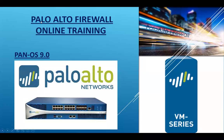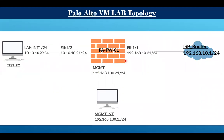Welcome guys, today I'm going to start Palo Alto firewall online training on PAN-OS 9. Let me show you my topology. Palo Alto is directly connected with my ISP router using the 192.168.10.0 network. For management we are using 192.168.100.0 network, and for the LAN network we are using 10.10.10.0/24. That is our topology.